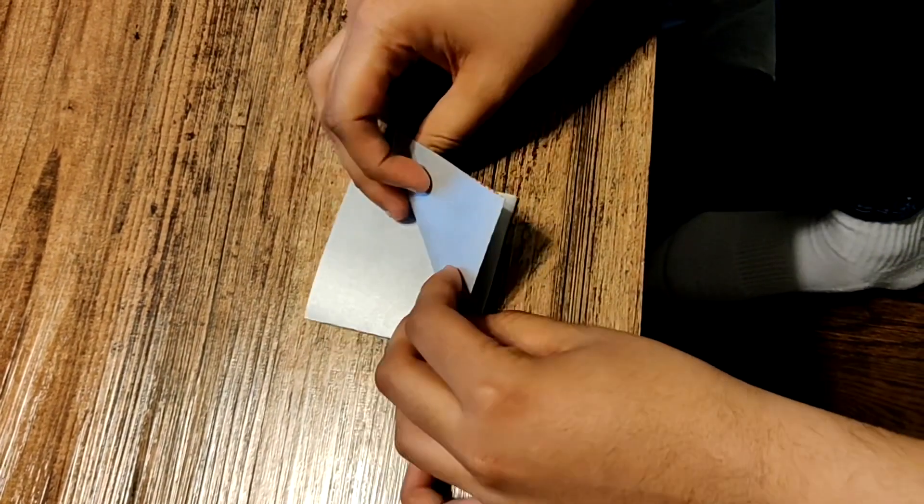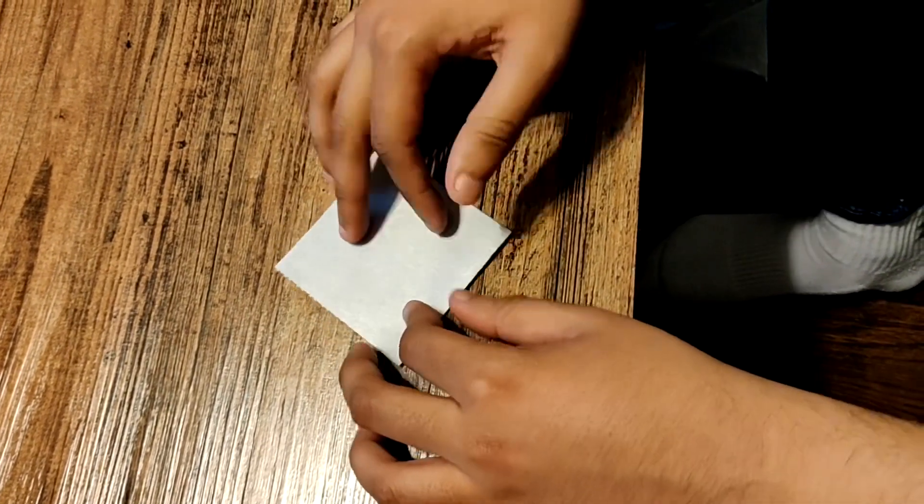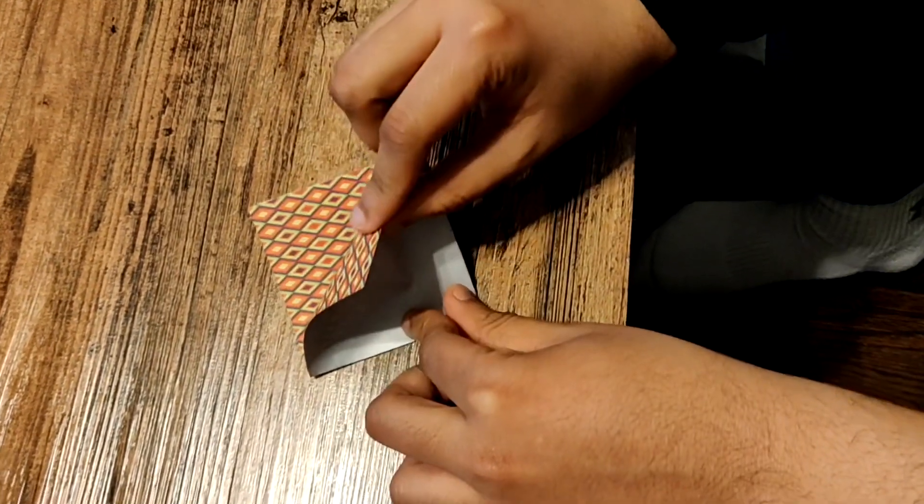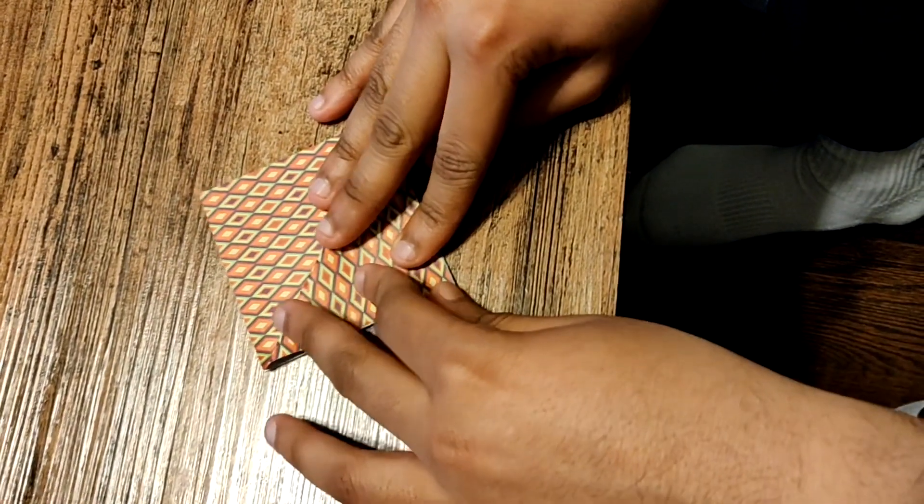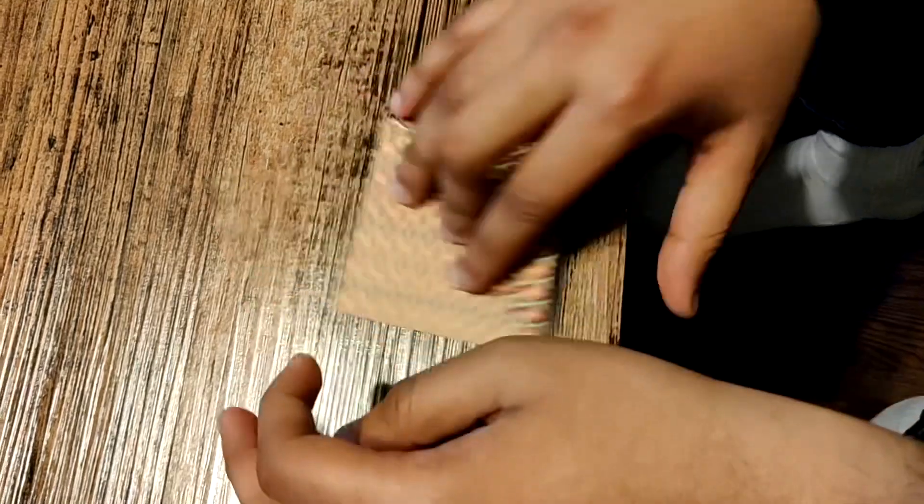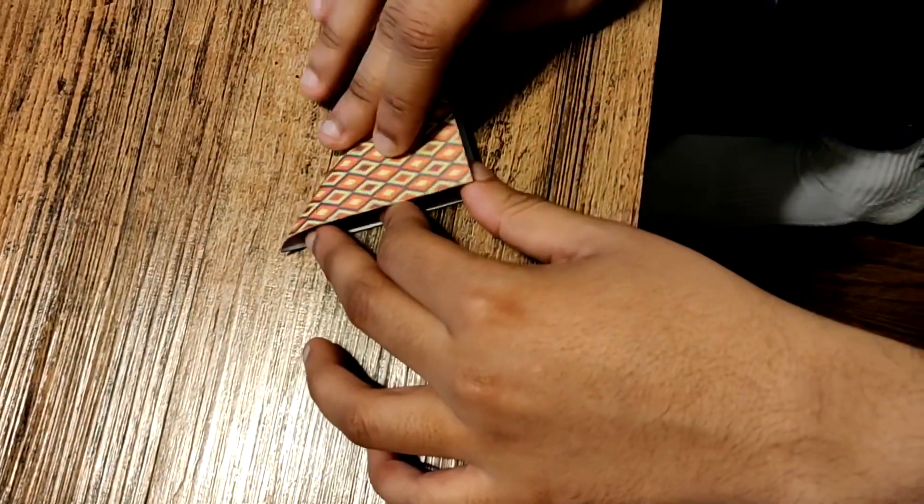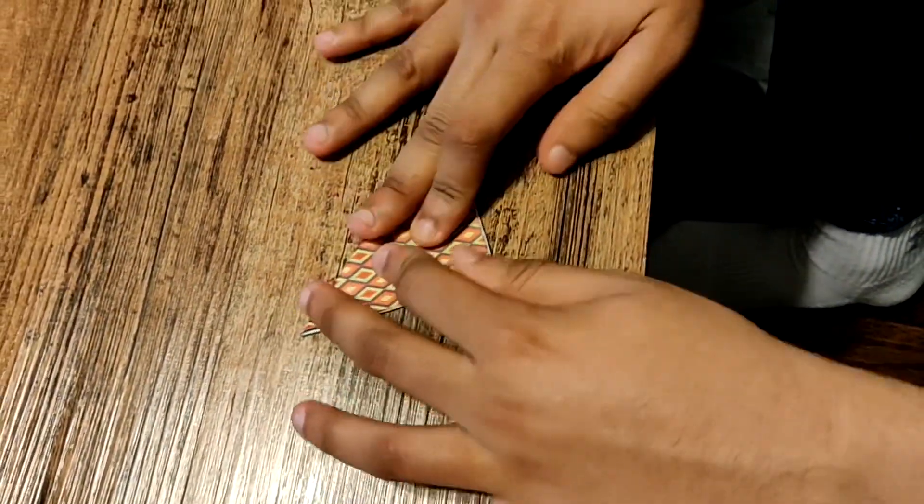Then what we're going to do is we're going to take one part, take this and fold it down. And we're going to take the other three and fold them down as well.